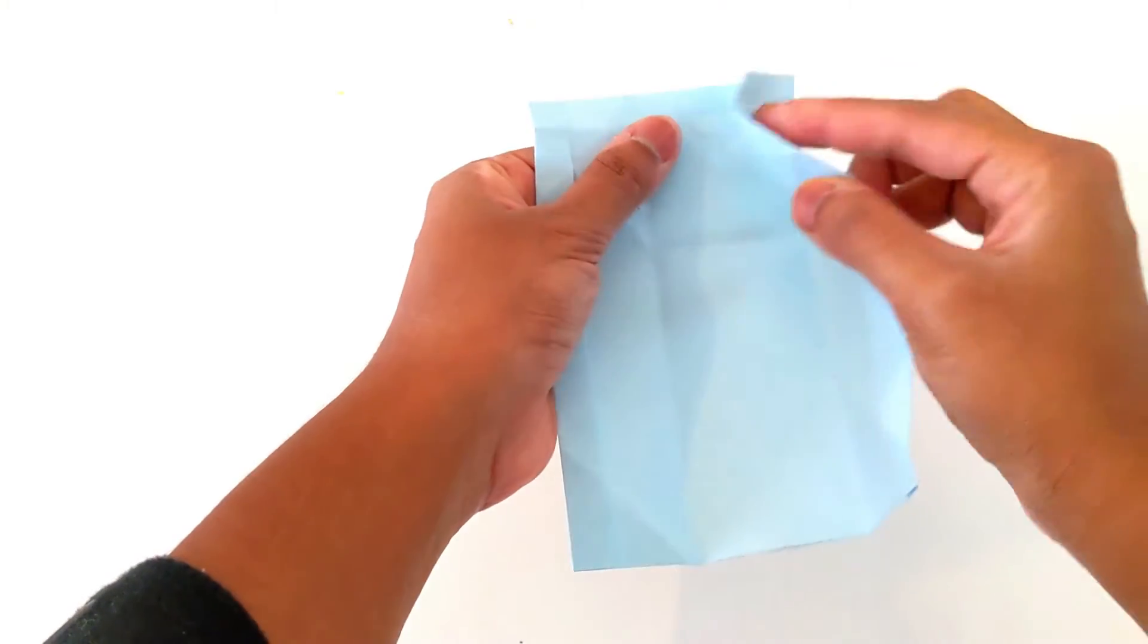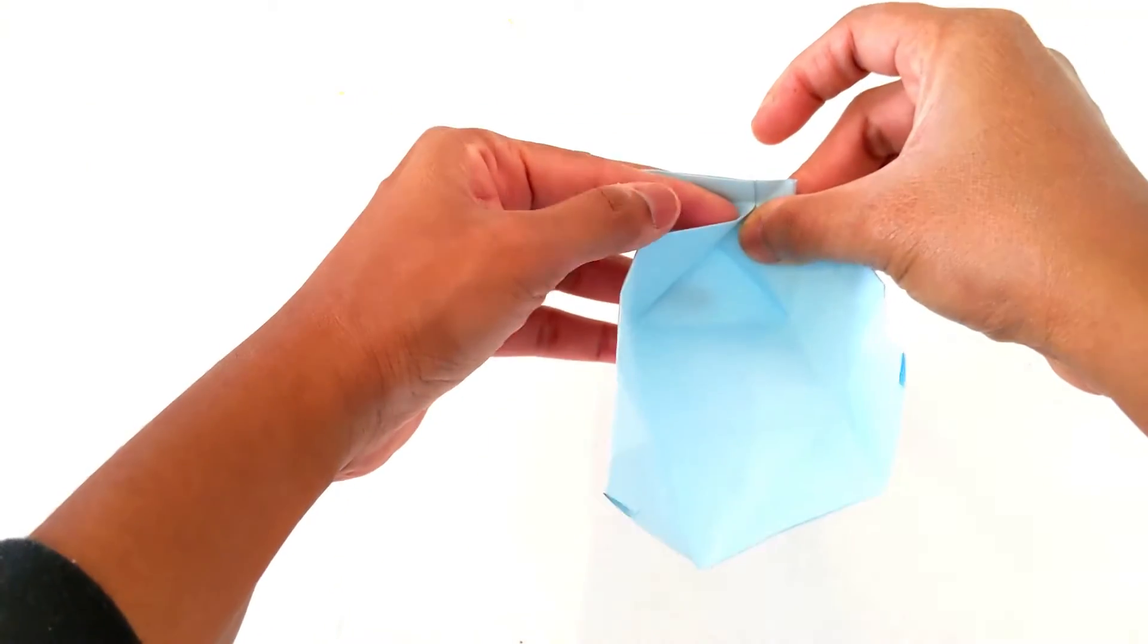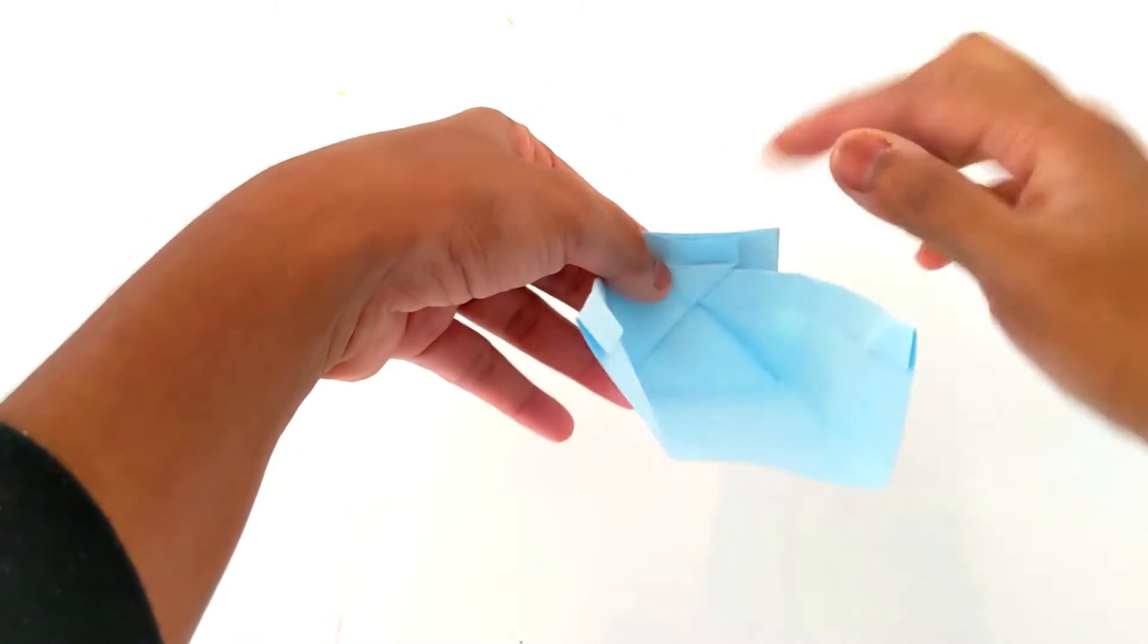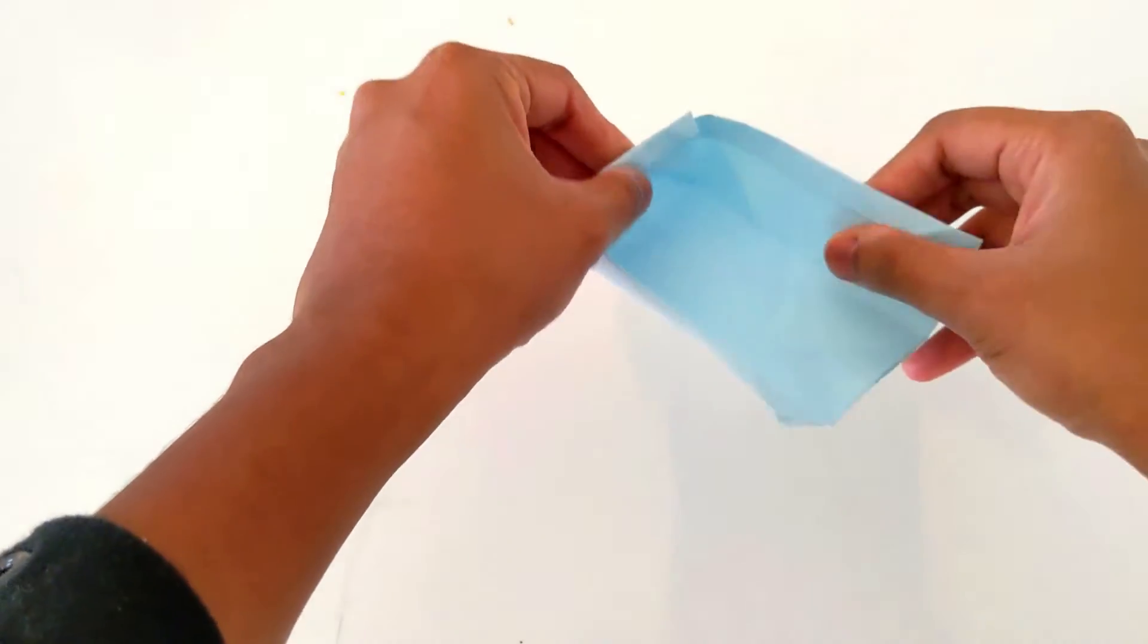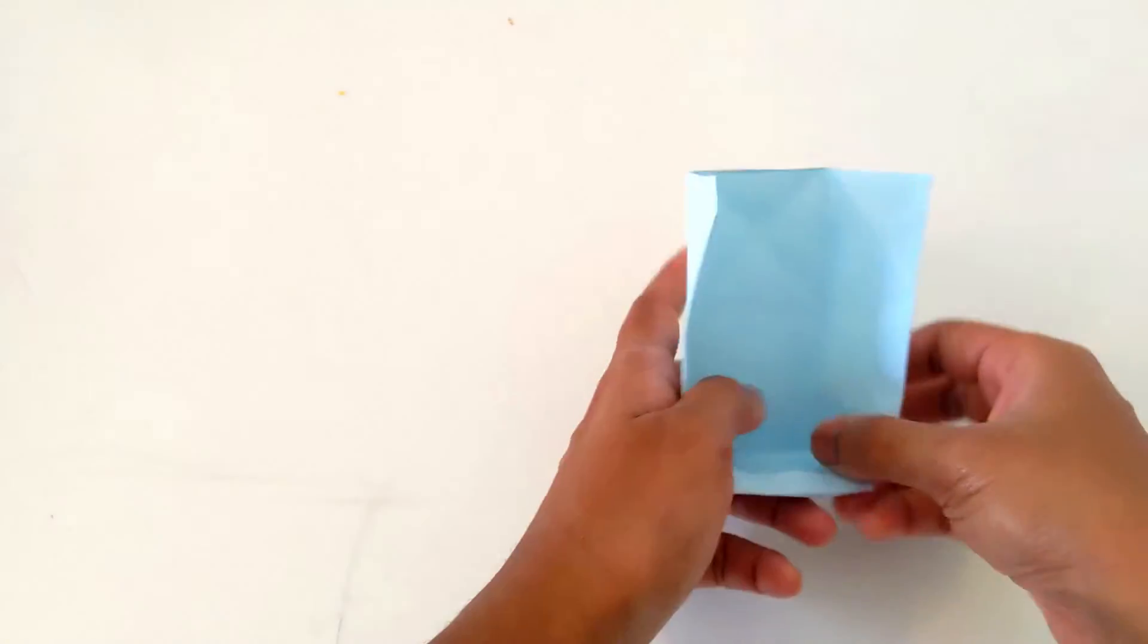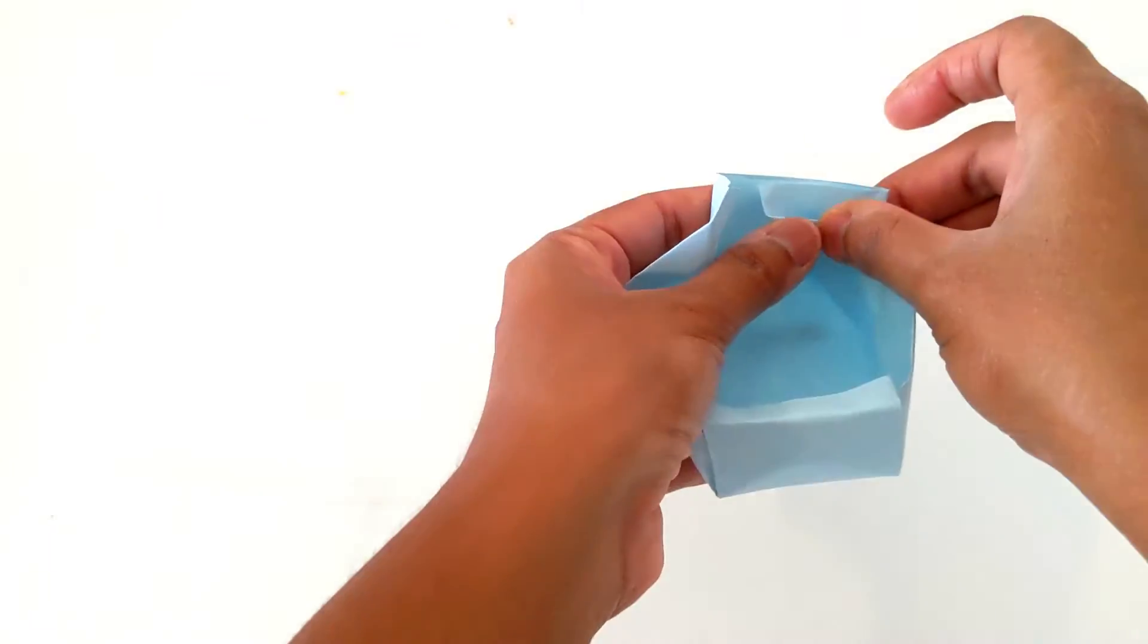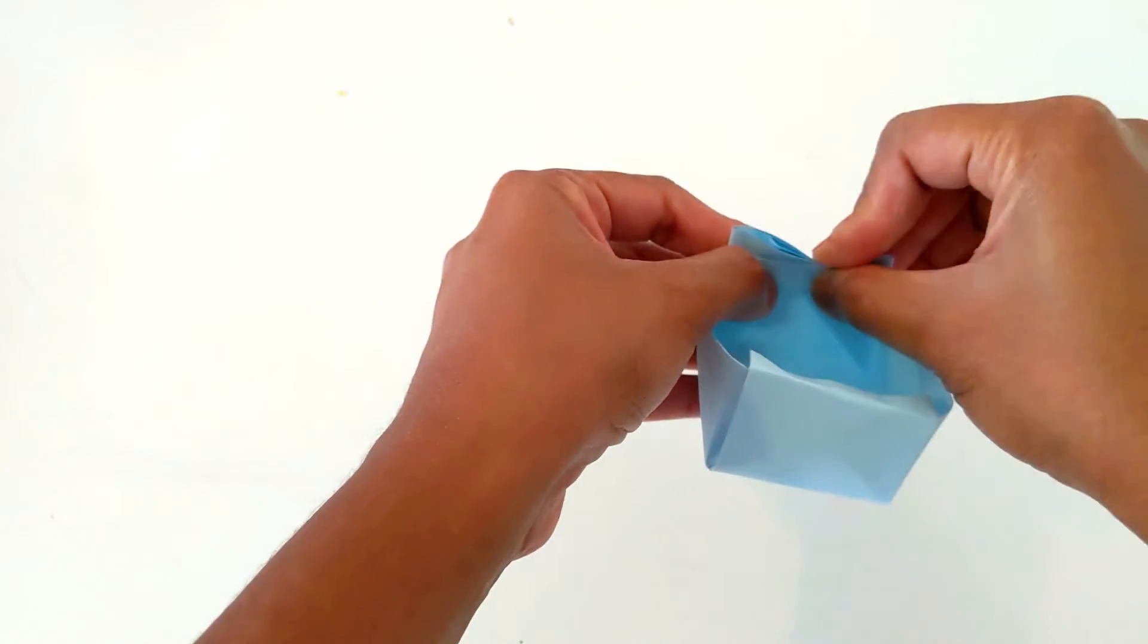Now open the paper. This step is very important - fold it like this and the upper part inside. You need to fold it inside like this. The same goes with the other side. Fold one side like this and fold it inside.